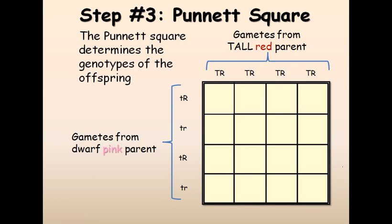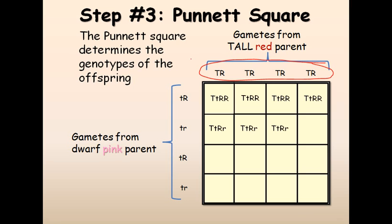Let us move on to the Punnett square to see how the zygotes will form. In the Punnett square, the sides represent gametes and the inside shows the zygotes formed when gametes combine. The gametes from the tall red plant are all TR. Combined with tR and tr from the pink plant, the resulting genotypes are TtRR, TtRr, TtRR, and TtRr.